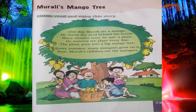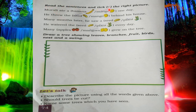The next thing is: 'Read the sentences and take the right picture.' There are some sentences based on Murali's mango tree — you have to choose the correct picture. First sentence: 'Murali ate a banana or mango one day?' — he ate a mango, so take mango. Next: 'He threw the seed behind his house' — so take seed. Next: 'Many months later, he saw a seed or plant?' — he saw a plant, so take plant.